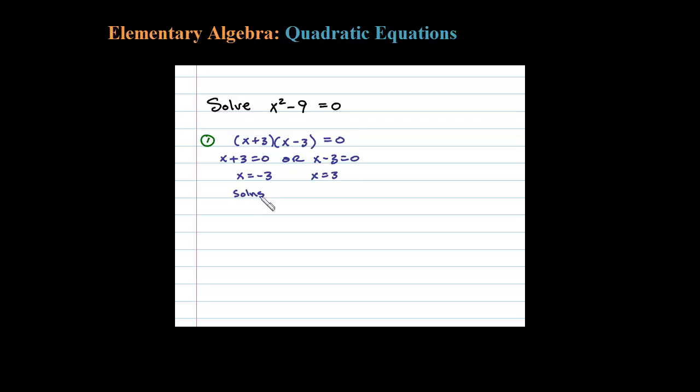So here I get two solutions. Certainly you can check those, plus or minus 3. When I plug in plus or minus 3 and square, I get 9. 9 minus 9 is 0.